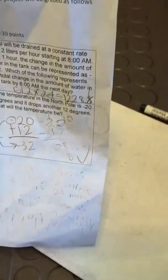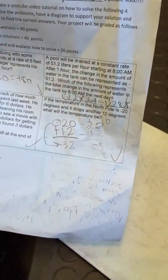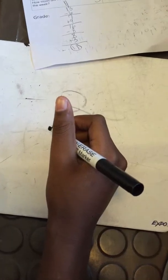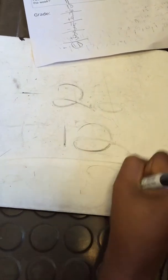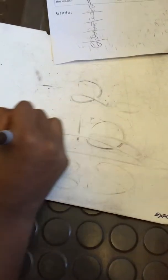Next problem. The temperature in the North Pole is negative 20 degrees and it drops another 12 degrees, what will the temperature be? Well basically you just add negative 20 plus regular positive 12, that gives you 2. You want to do this to the 3, and you have a negative because the 20 is the biggest number, so negative 32, that's how you solve it.